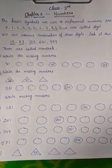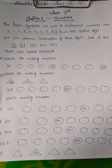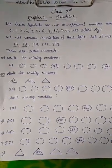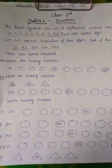0, 1, 2, 3, 4, 5, 6, 7, 8 and 9. And we use various combination of these digits for making numerals.